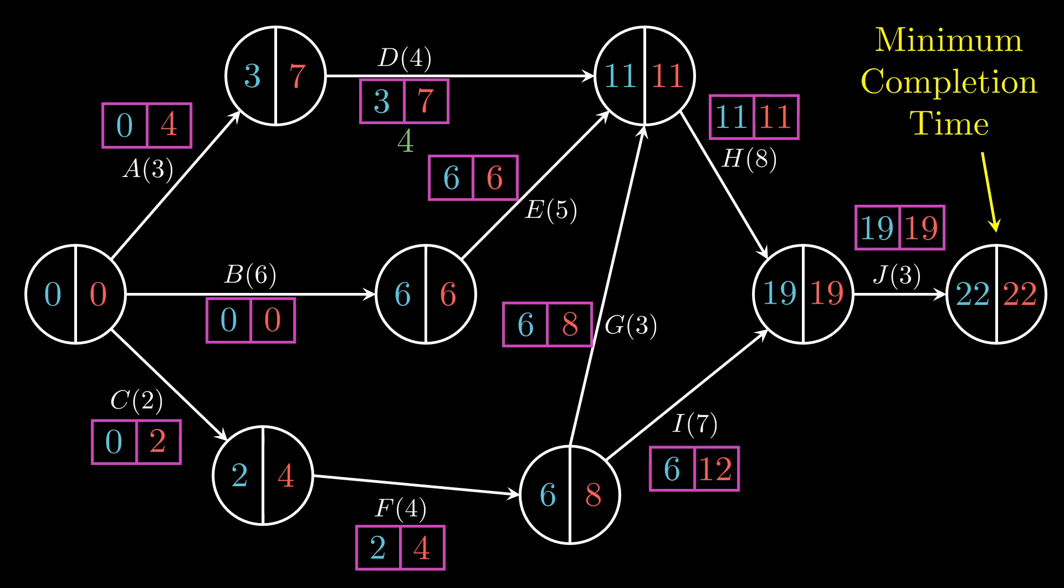So we can do the same simple calculation with just subtracting the blue and red numbers to find how long everyone can wait for, and we get all those float times in green there.